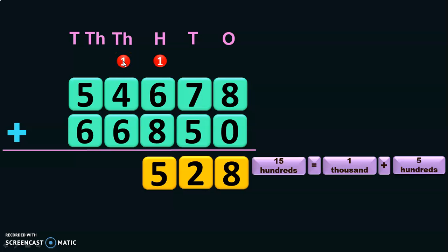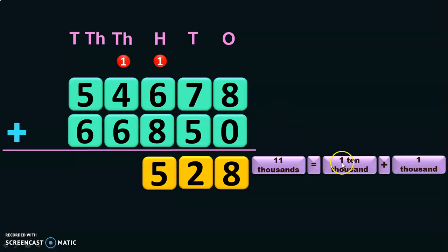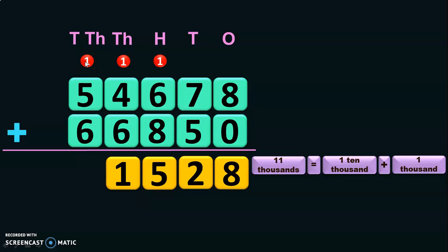Add the digits in the thousands place next: 1 plus 4 is 5, and 5 plus 6 is 11 thousands. Regrouping 11 thousands gives 1 ten-thousand plus 1 thousand, so retain the 1 thousand in the thousands place and take the 1 ten-thousand as a carry-over to the ten-thousands place. Adding the digits in the ten-thousands place: 1 plus 5 is 6, and 6 plus 6 is 12.